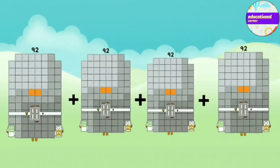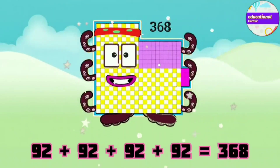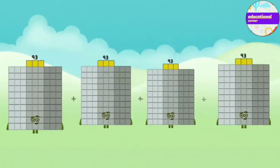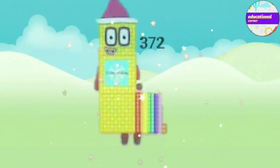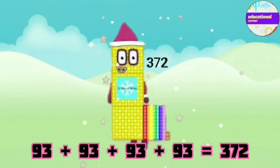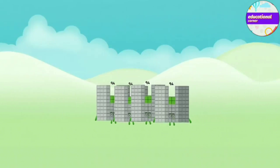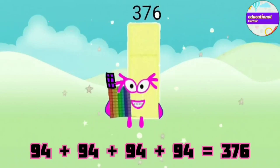92 plus 92 plus 92 plus 92 equals 368. 93 plus 93 plus 93 plus 93 equals 372. 94 plus 94 plus 94 plus 94 equals 376.